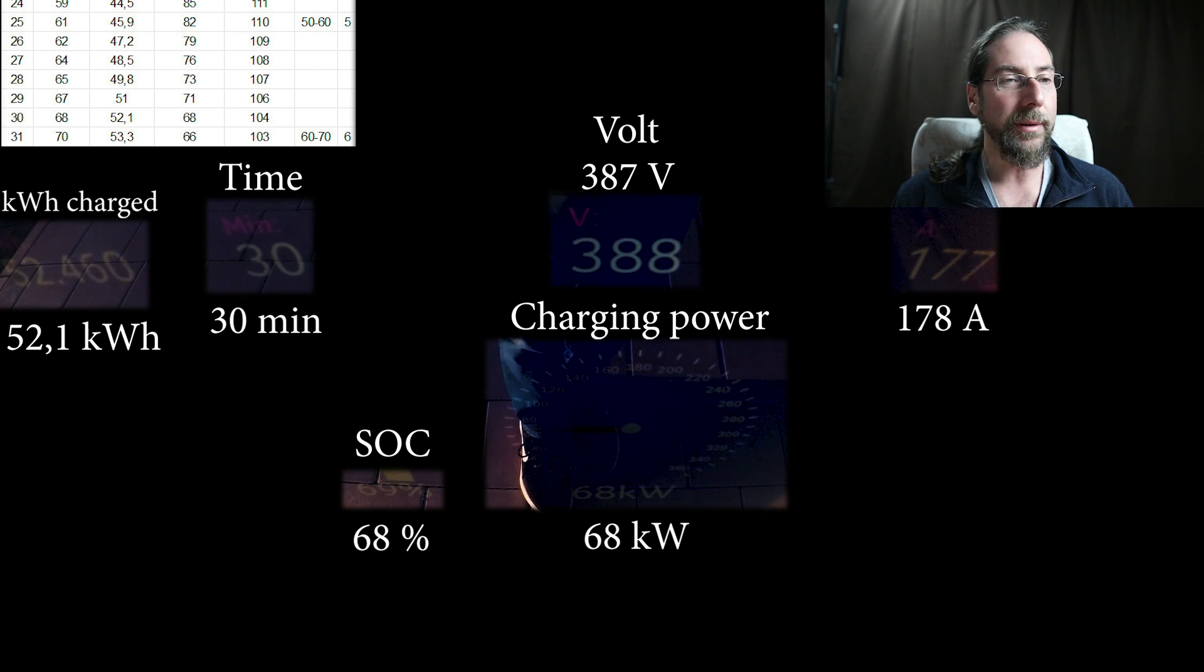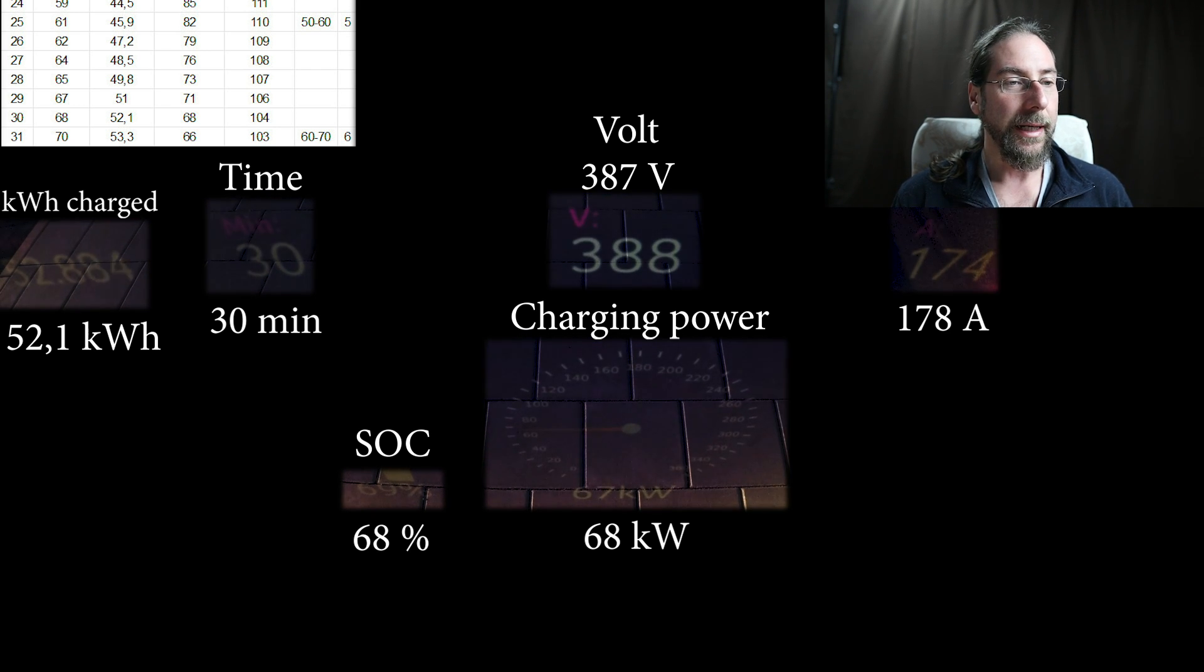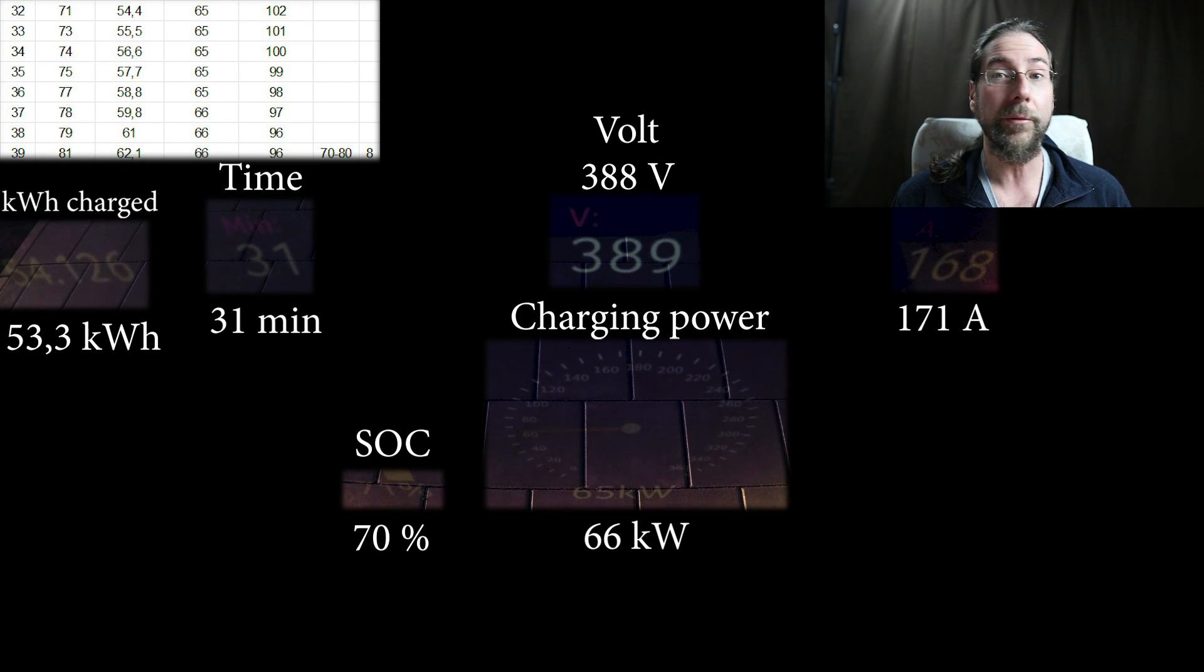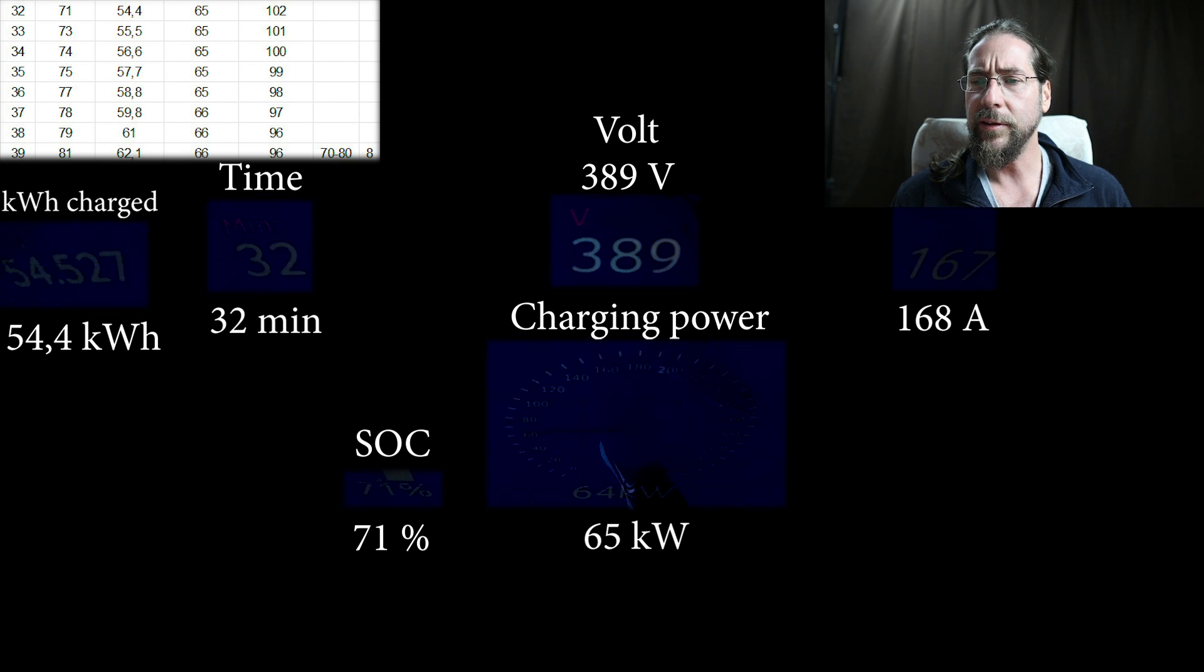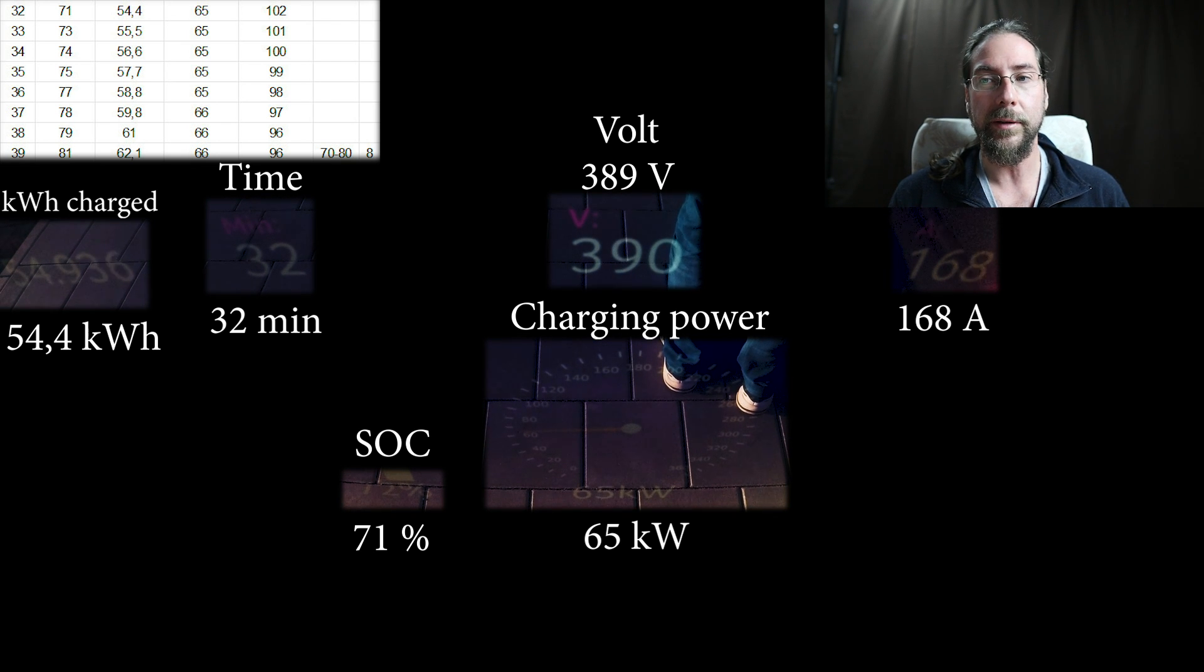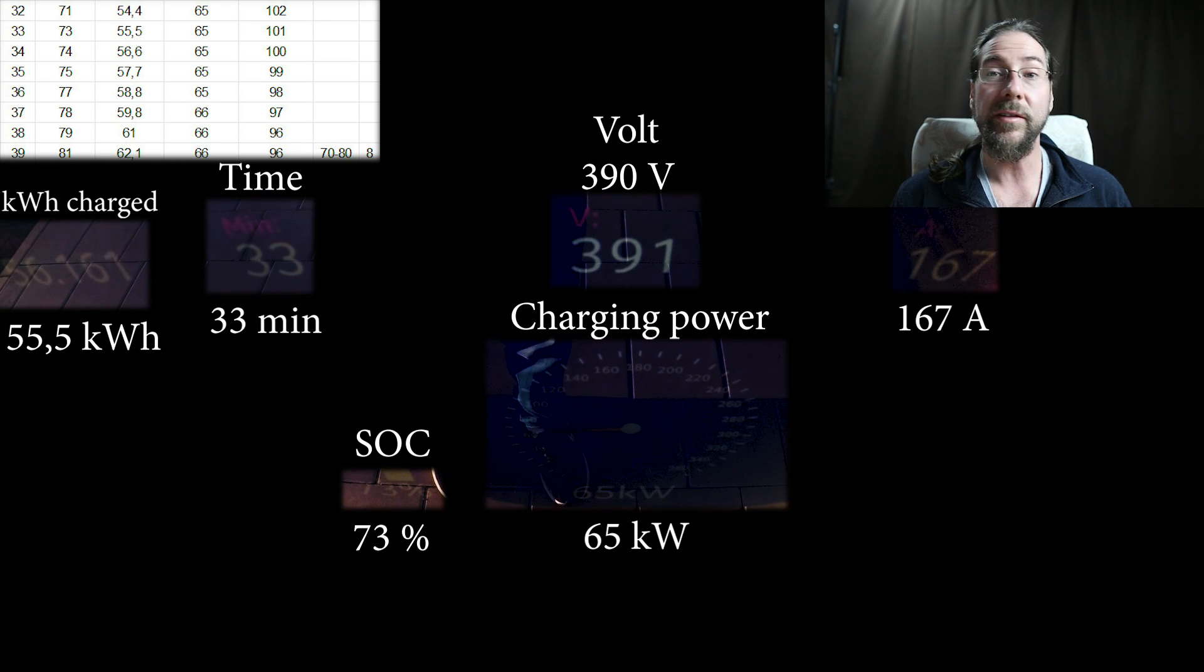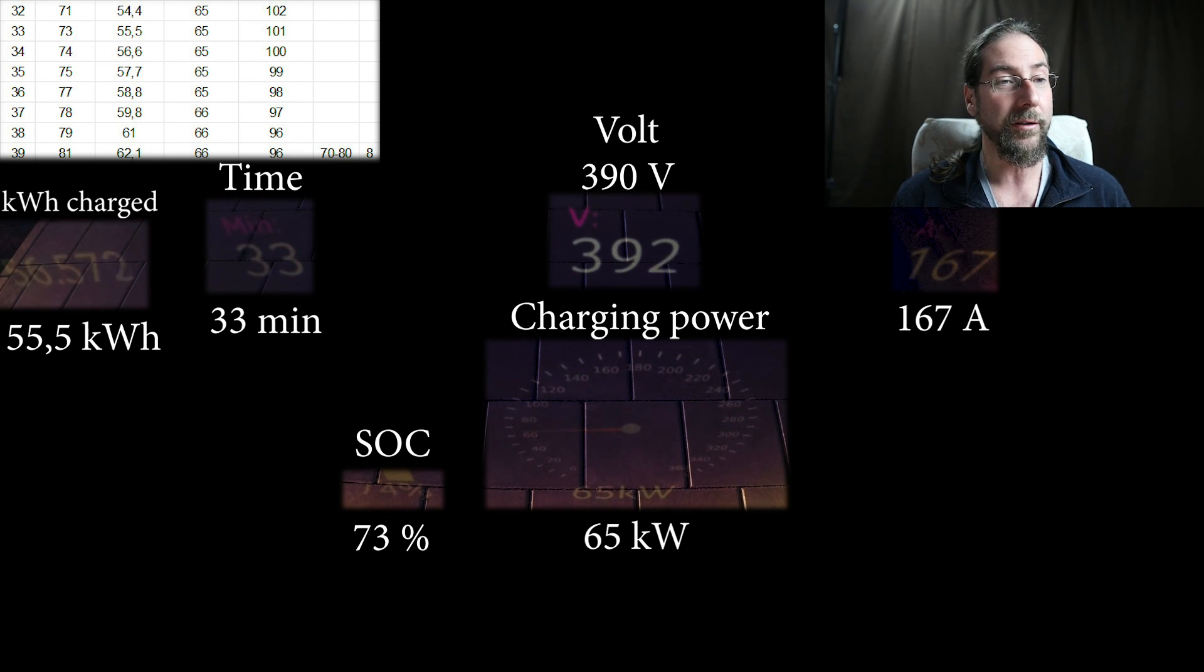We had 71 kilowatts after 29 minutes, or 70 kilowatts charging, 68 percent, 51.7 kilowatt hours charged. Voltage goes still a bit up and amps go down of course, and I think I sped up the video a bit now. 70 percent, 66 kilowatts still charging after 31 minutes, 53.3 kilowatt hours charged. 60 to 70 percent took six minutes, we're slowing down a bit. On the side here you can always see the average charging speed. After 33 minutes, 73 percent, 65 kilowatts still charging, 56.6 kilowatt hours charged. It's really going, even to 99 percent you will see it still charges with 27 kilowatts, that's just awesome.